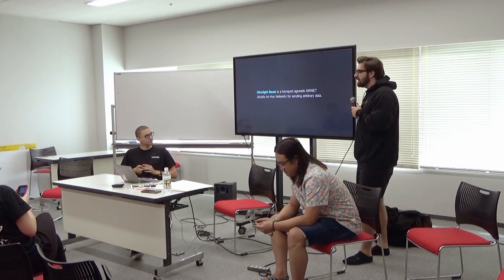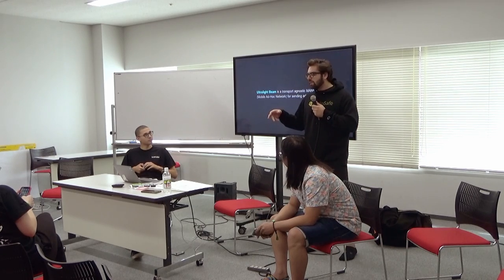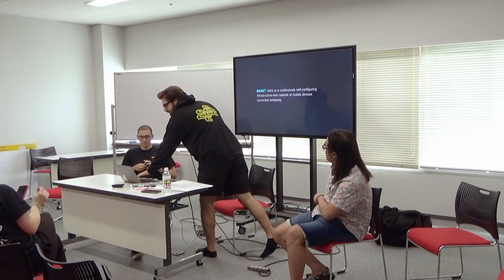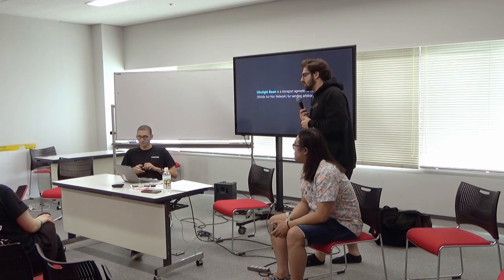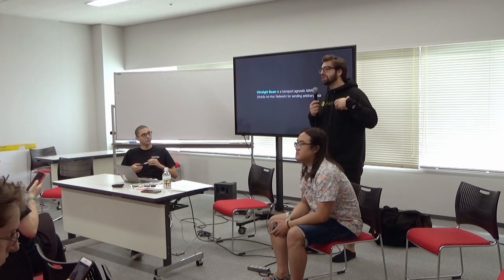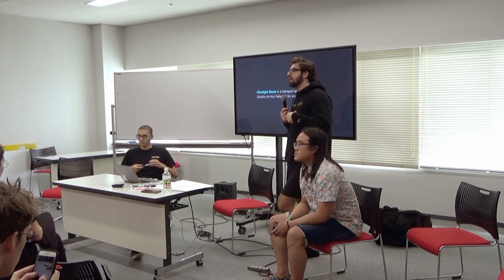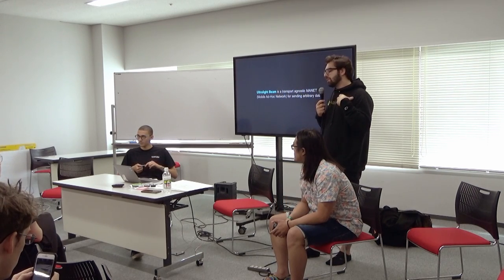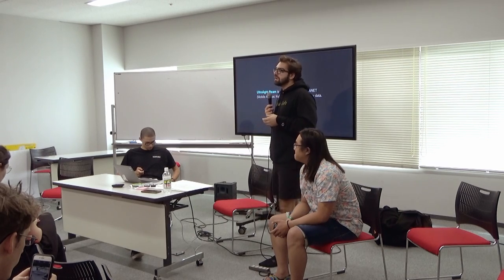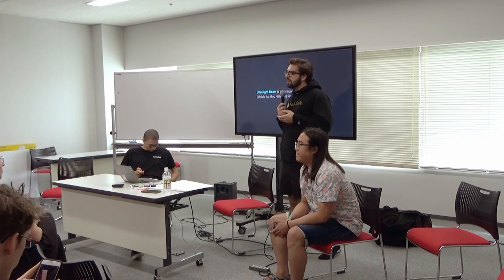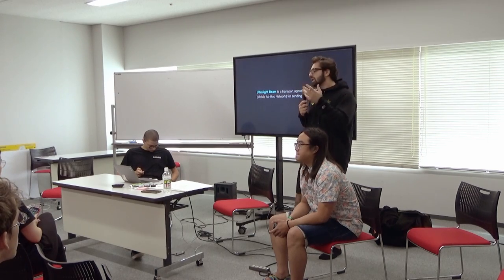So basically, what is Ultralightly? We're a transport-agnostic MANET — mobile ad hoc network — for sending arbitrary data over the wire. We don't really care whether you use Bluetooth, Wi-Fi Direct, or anything else. We're trying to find a way to communicate over networks where we don't care about the topology — we care about how you're transmitting data from one peer to another when you don't have a stable connection. The goal is to relay Ethereum transactions, or just any transaction really, in a very unstable environment.